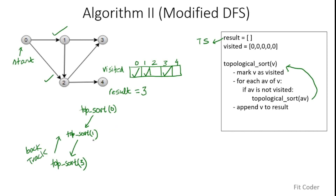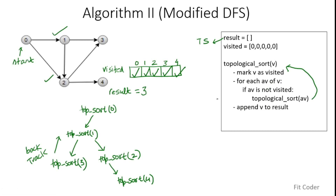Back at topological_sort(1), vertex 1's other adjacent vertex is 2. We call topological_sort(2), mark 2 as visited. Adjacent vertices of 2 are 3 and 4; 3 is already visited, so we call topological_sort(4). We mark 4 as visited; it has no adjacent vertices, so we append 4 to the result and backtrack. Back at topological_sort(2), both 3 and 4 are done, so we append 2 to the result and backtrack.